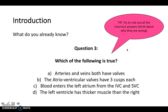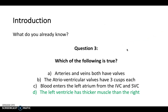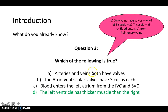The correct answer here is D — the left ventricle has thicker muscle than the right. The other answers are incorrect because A is not true: only veins have valves, not arteries, and the reason is so they can prevent the back flow of blood.